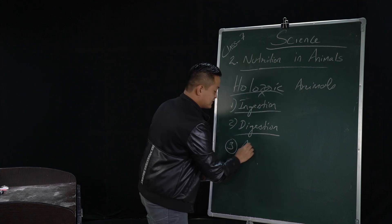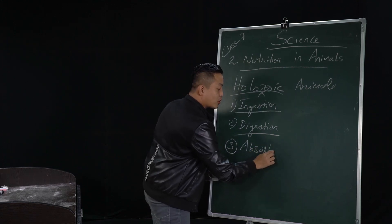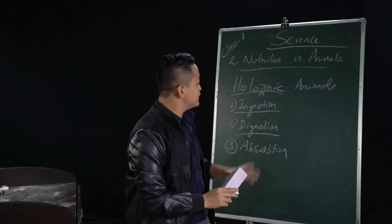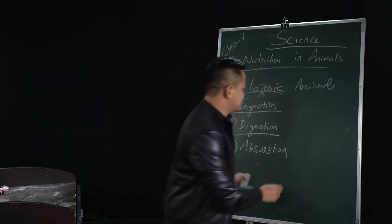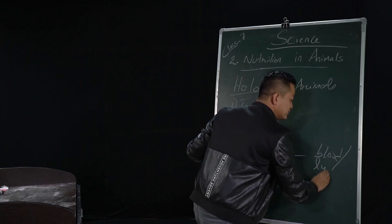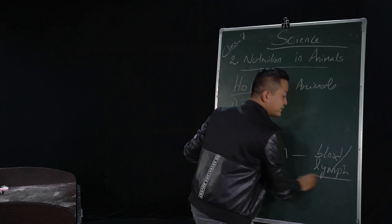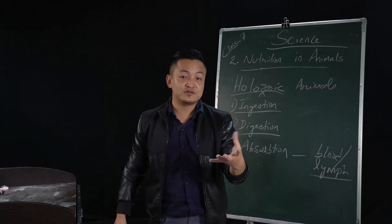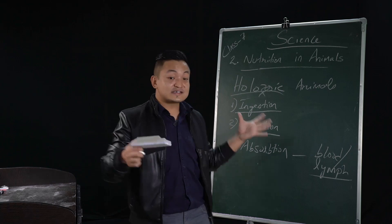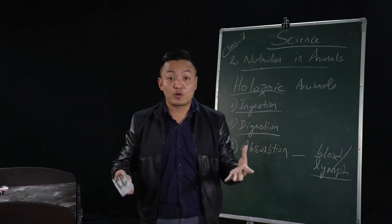After digestion, what happens? Absorption. All the digested food passes into the blood or lymph. The digested food passes into the blood or lymph, and this is a form of absorbed food.